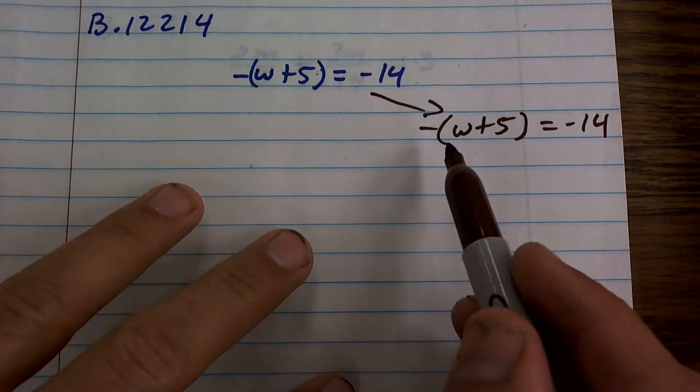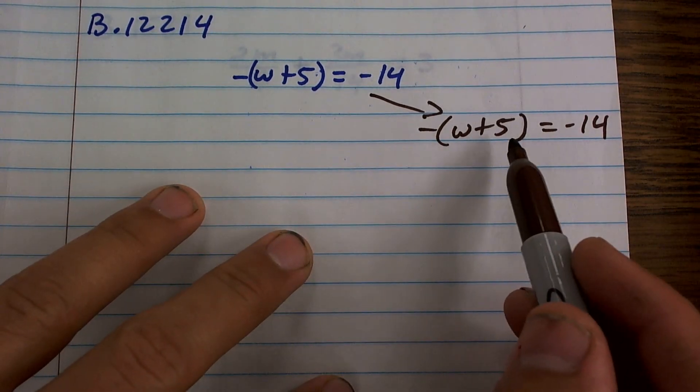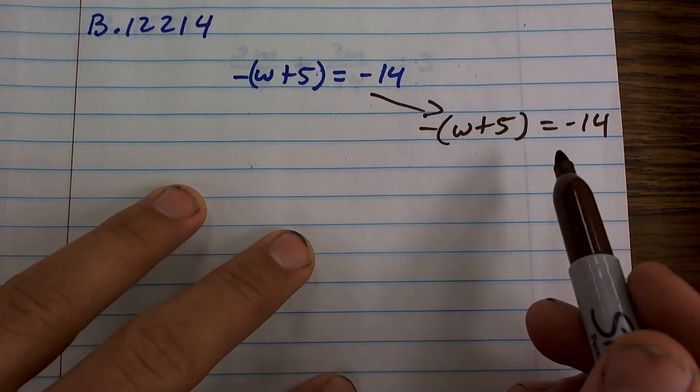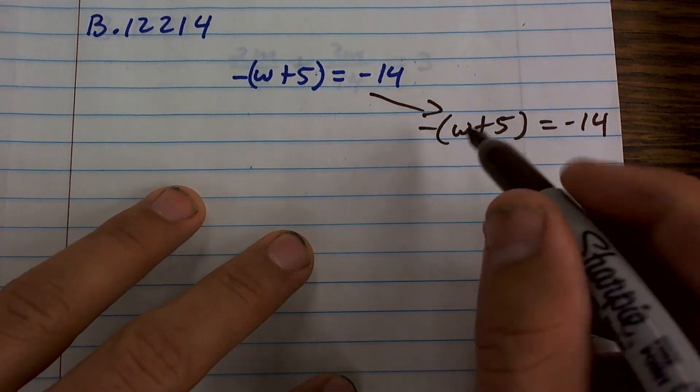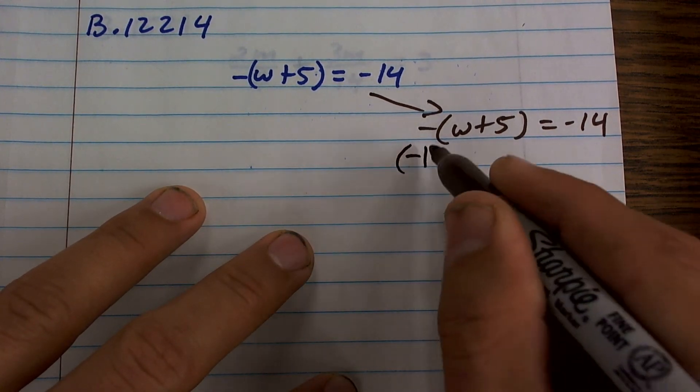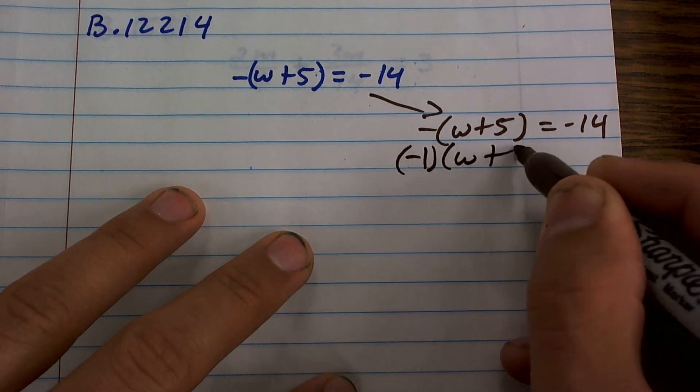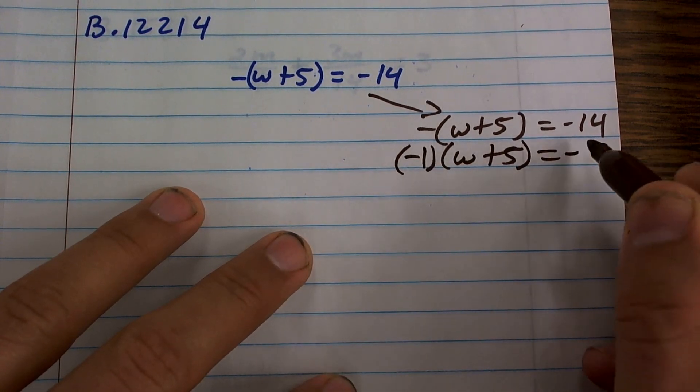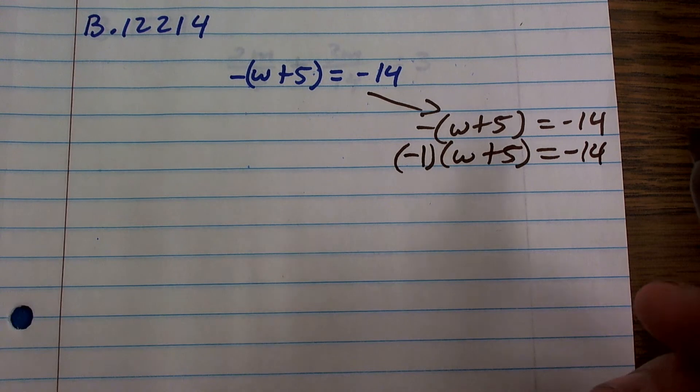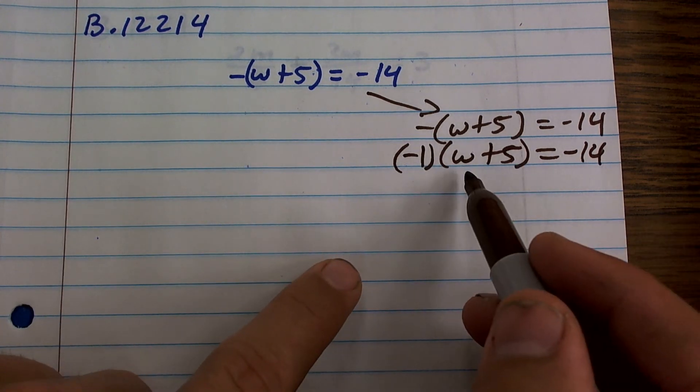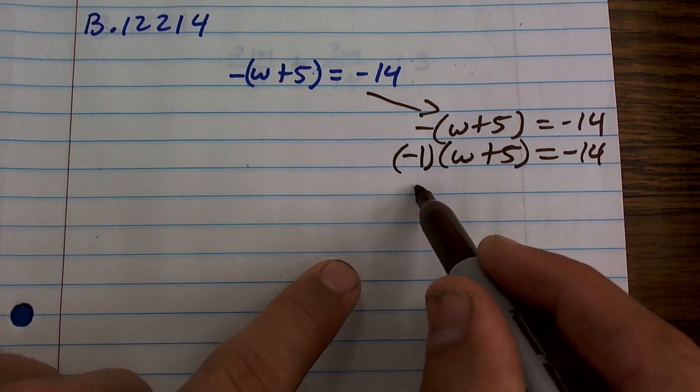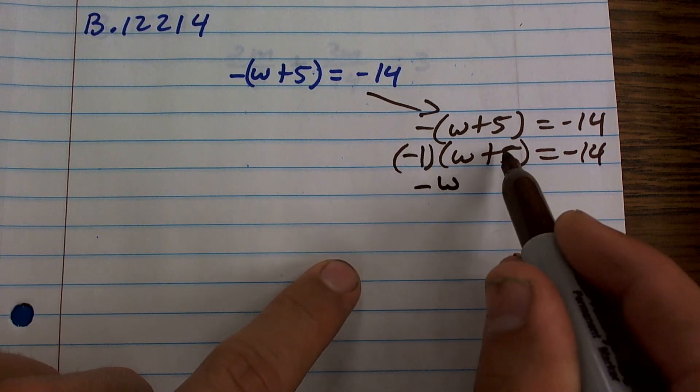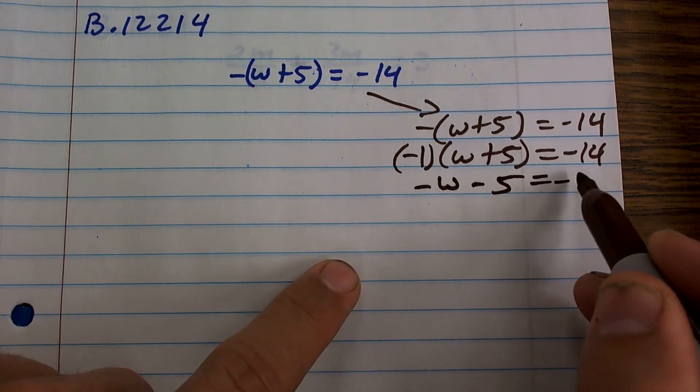So here I have negative times w plus 5 equals negative 14. Remember that when you have a negative sign, that is the same thing as negative 1 times w plus 5 equals negative 14. Now I can apply the distributive property. So negative 1 times w is a negative w. Negative 1 times 5 is a negative 5 equals negative 14.